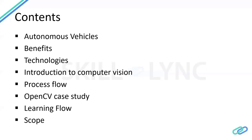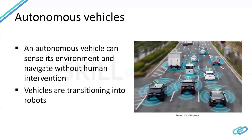We're also going to be speaking about how you can become a computer vision engineer — what the requirements are and what topics you need to know. Last but not least, we'll be speaking about the scope of a computer vision engineer in the current industry: what a computer vision engineer would do and which industries they could be applying to. With that, let's start with autonomous vehicles.